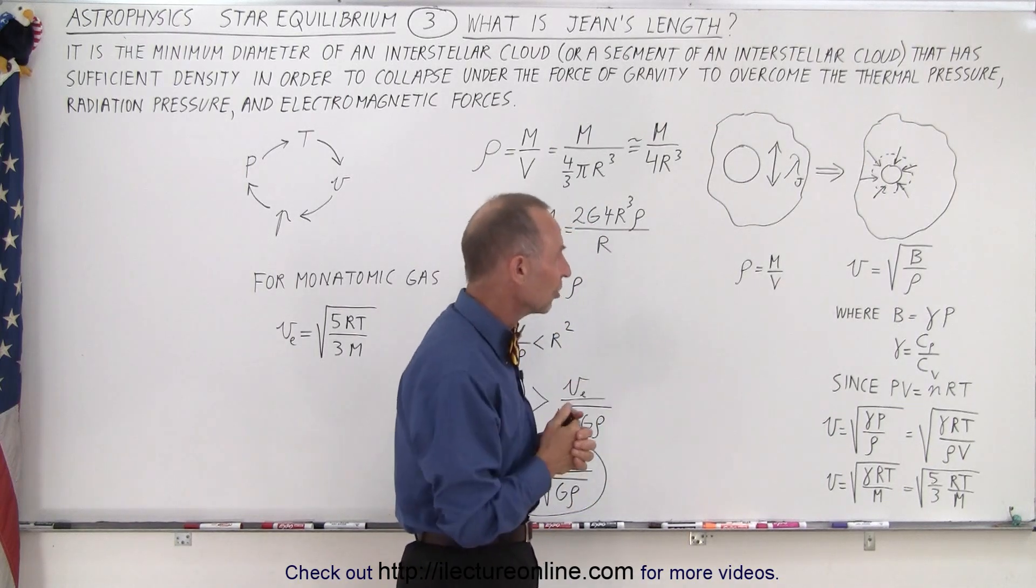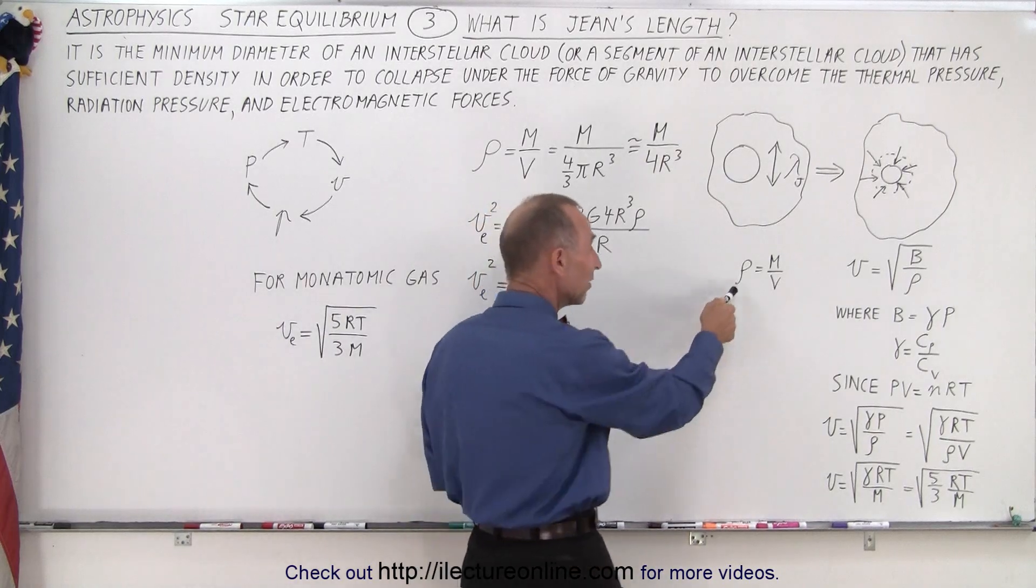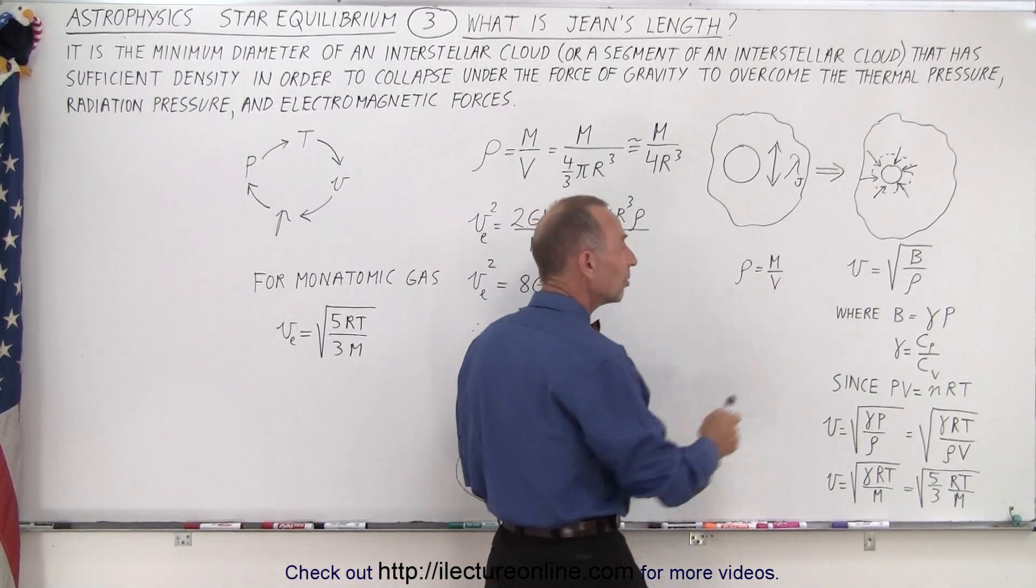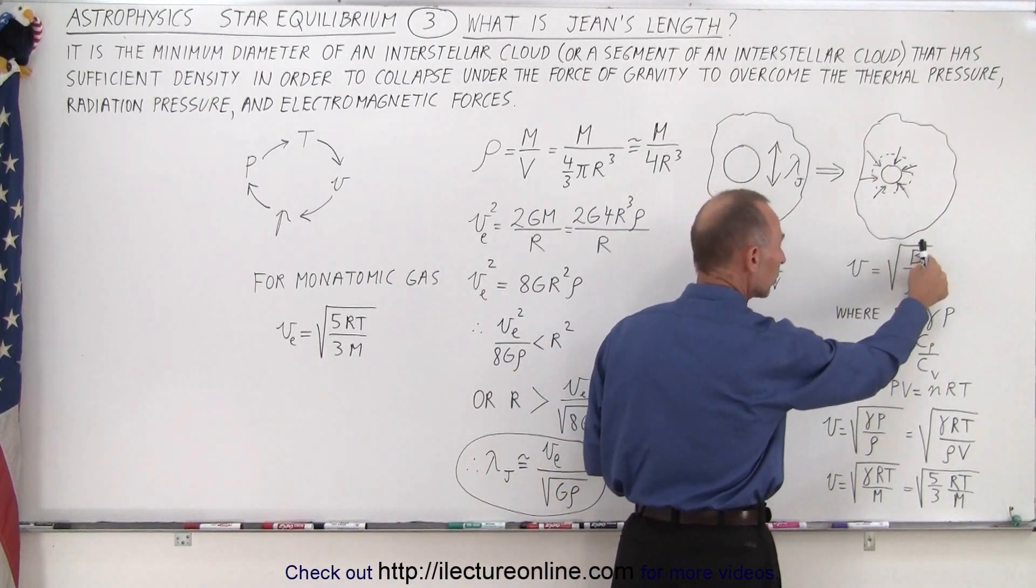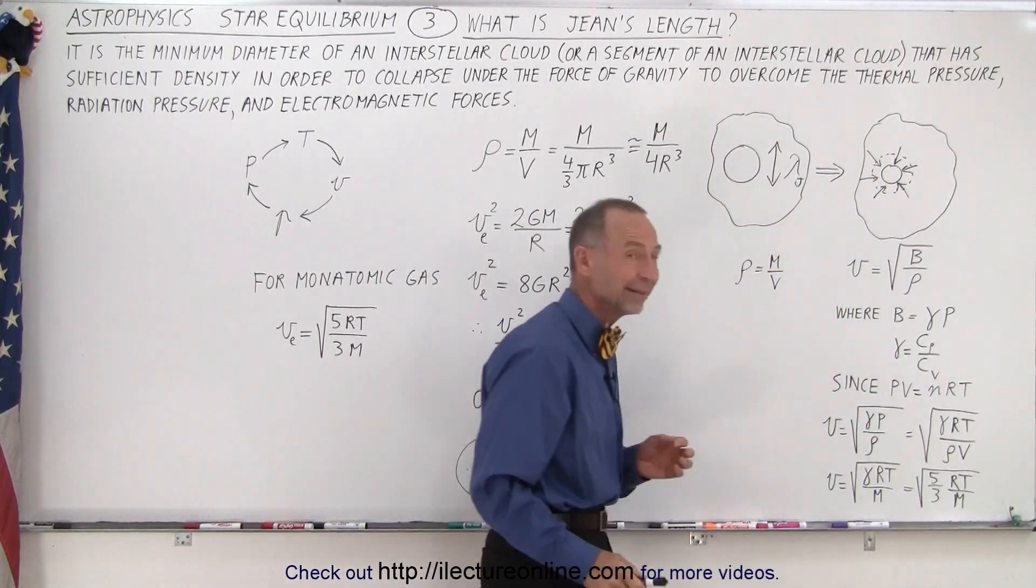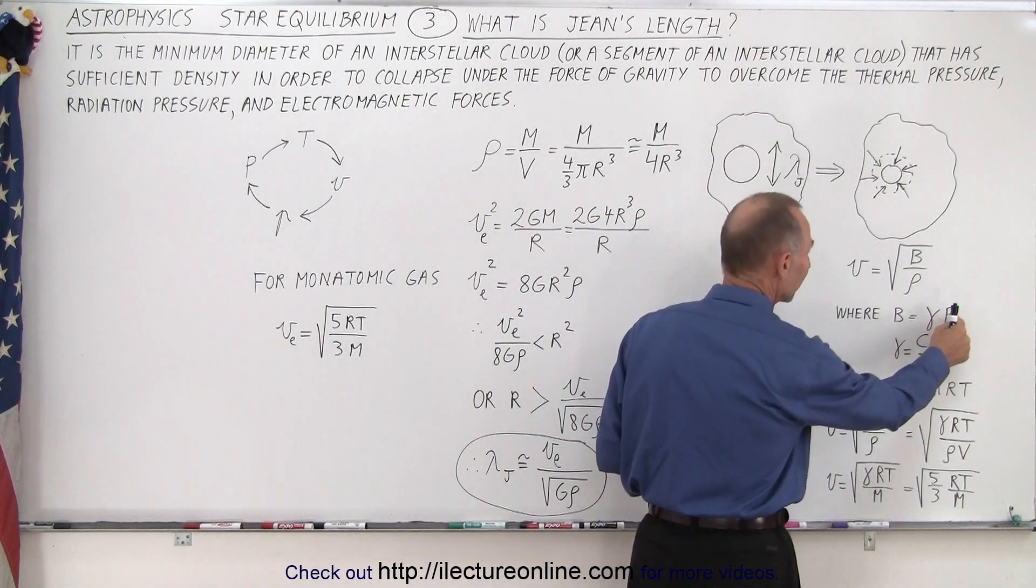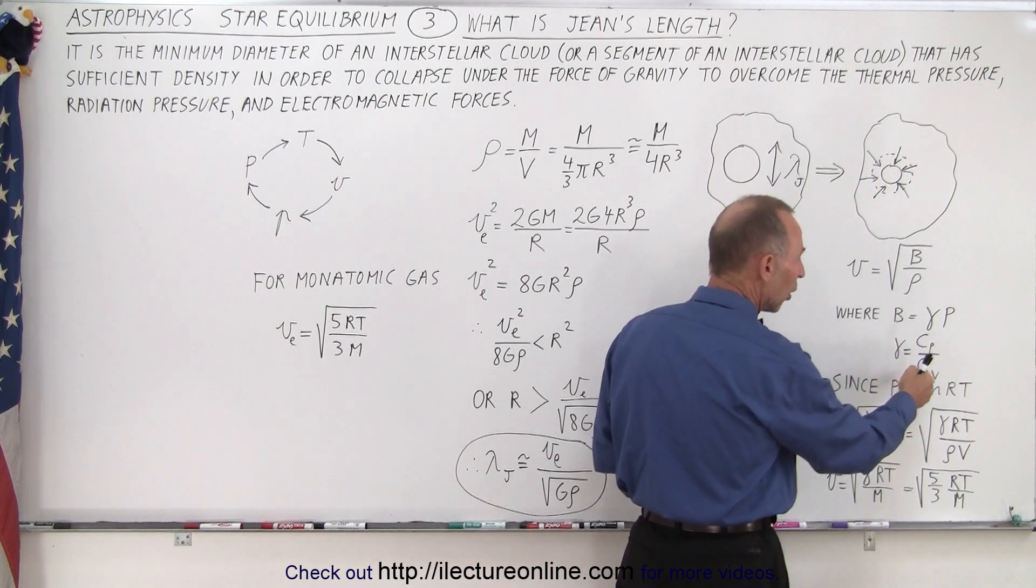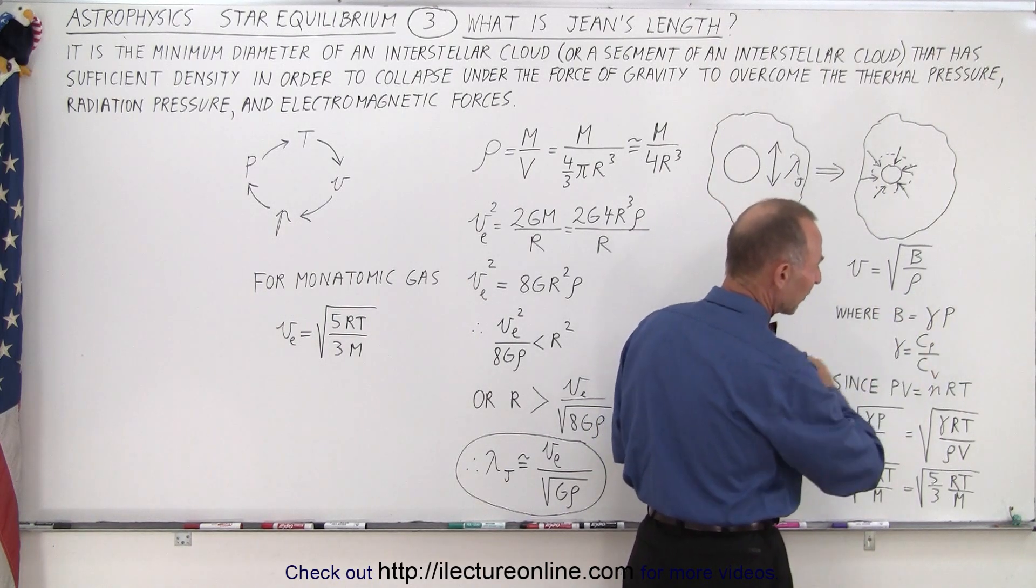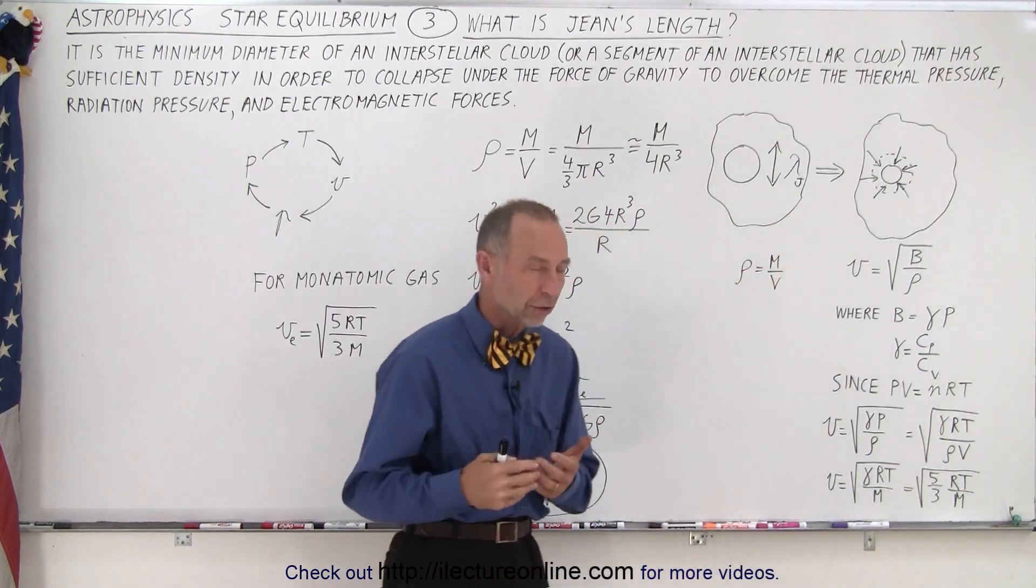So how do we calculate Jeans length? Well, we need some concepts. We need the concept of density, which is mass divided by volume, and the velocity of molecules in a gas, which is equal to the square root of the bulk modulus divided by the density. And the bulk modulus can be defined as gamma times p, the pressure in the gas, and the gamma is the ratio of the molar specific heat under constant pressure divided by the molar specific heat under constant volume.